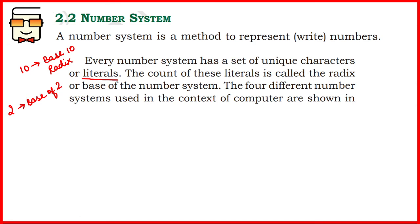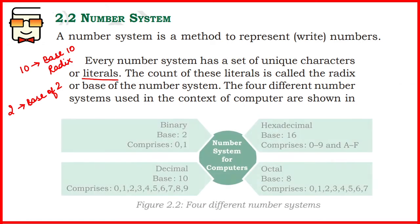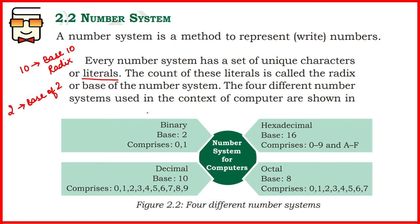There are four major number systems we consider when talking about computers and how a computer processes information. The first and most important is the binary number system. It consists of two unique digits — 0 and 1 — and since there are two literals it has a base of 2. This is the method by which the computer understands information and converts it into binary form from any human-understandable form. The second most important, and most usable in daily life, is the decimal number system, which comprises 10 unique digits or literals and therefore has a radix or base of 10.